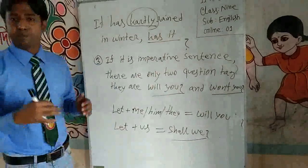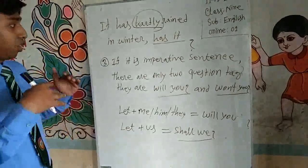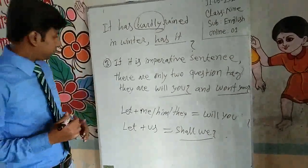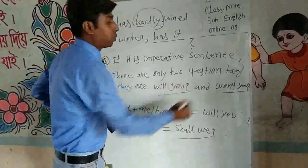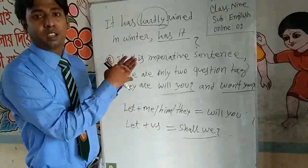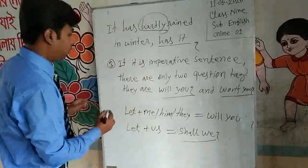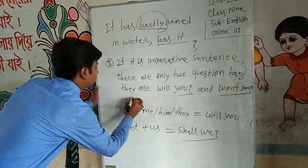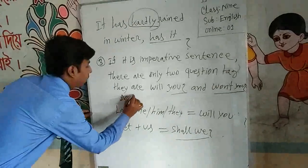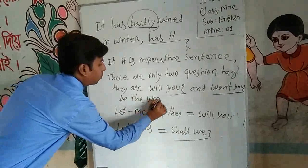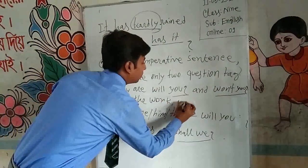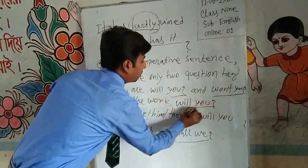Rule three: if it is an imperative sentence, there are only two question tags — 'will you' and 'won't you'. If the sentence is imperative, we use either 'will you' or 'won't you'. For example: 'Do the work' is an imperative sentence, so we use 'will you?' — 'Do the work, will you?'